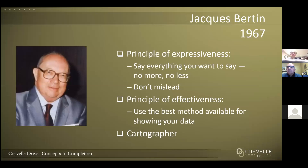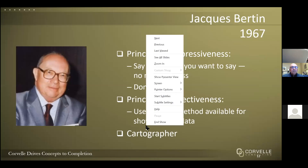Jacques Bertin was a cartographer who wanted to ground his practical advice about chart making in a theoretical foundation. Rather than focus on which chart types to use, Bertin described an elementary system that still frames contemporary data visualization theory. He established two deeply influential ideas: the principle of expressiveness — say everything you want to say, no more, no less, and don't mislead — and the principle of effectiveness — use the best method available for showing your data. If position is the best way to show your data, use that; if color is more effective, use that.